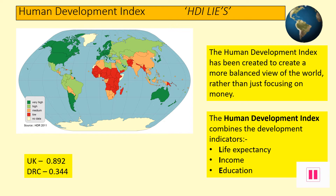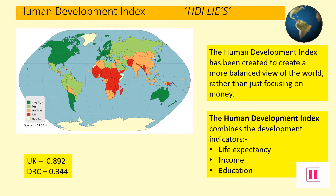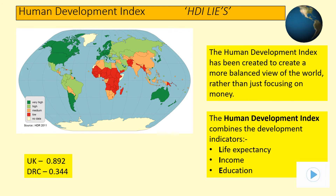How long somebody lives on average can be determined by their work, lifestyle, access to medical care, and diet within a country. Education also helps determine how advanced a country can be, and closely links in with income and life expectancy to help us assess the quality of life for different people around the world. Pause the show and make sure you understand the Human Development Index, how it combines a range of indicators, and the values for the DRC and UK before moving on. You should also copy down what HDI stands for to help remember what the letters mean.